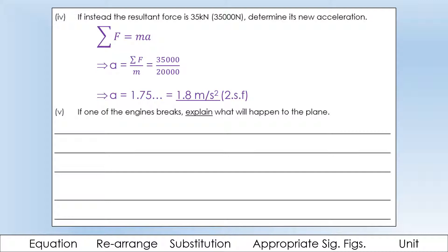If one of the engines breaks, explain what will happen to the plane. So, the thrust force will decrease. If one of your engines is broken, the forward thrust force is going to be smaller. And that's going to mean that the resultant force is now backwards. Because drag, at that point, would be now greater than the thrust force. And if that's true, it's going to slow down. If the resultant force is in the opposite direction to your motion, you are going to slow down, or decelerate.